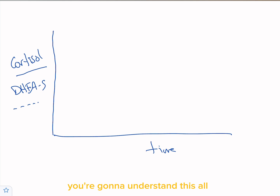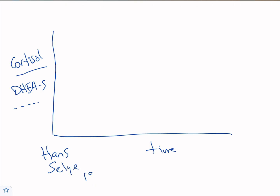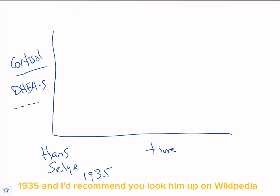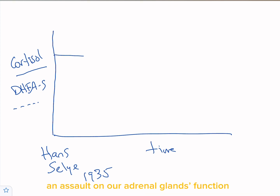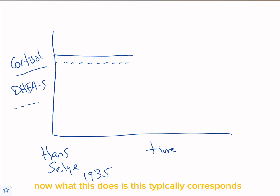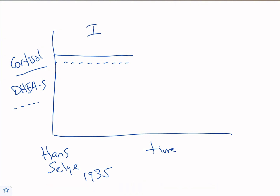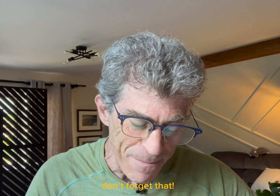I'd recommend you look him up on Wikipedia — he did some really interesting work. In the alarm stage, the initial stage of an assault on our adrenal gland function, both our cortisol and our DHEA are elevated. This typically corresponds with what we describe as stage one adrenal fatigue — but remember, the adrenals don't fatigue.